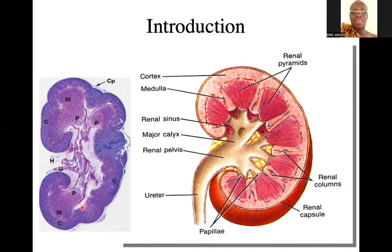We want to start by looking at the introduction, where we are going to compare the micrograph here with that of a drawing. For histology, our interest is usually micrographs. So when you look at this vertical section through the kidney, it's always easier to start with a drawing on the gross anatomy because you can see that clearly. That is the bean-shaped kidney, which has two major parts: the cortex and then the medulla.